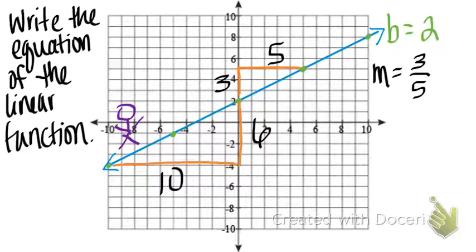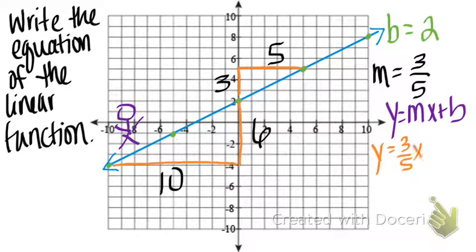So, now I can write my equation in slope-intercept form, which is y equals mx plus b. So, my slope, just substituting in, my slope was three-fifths, so I have y equals three-fifths. And I leave x as it is. And then my y-intercept was two. That's rewriting it in slope-intercept form.